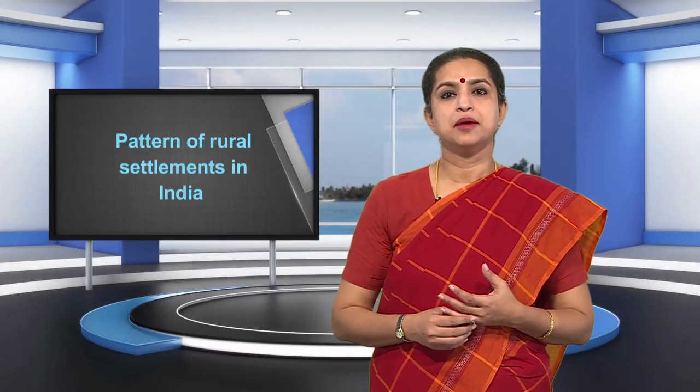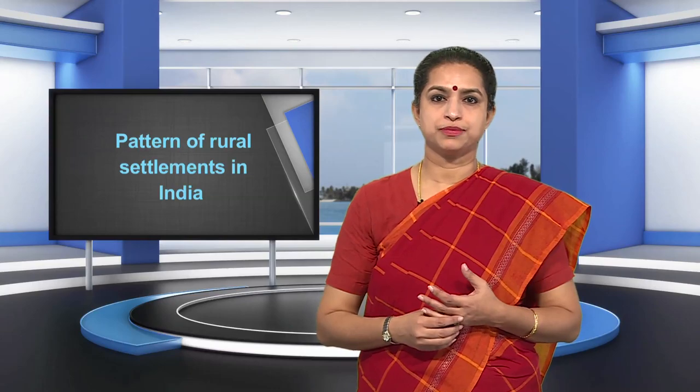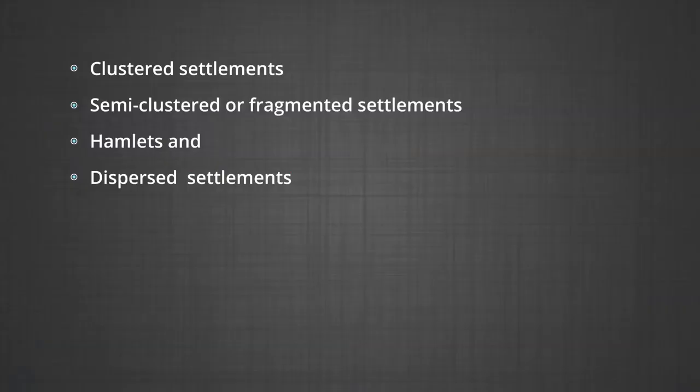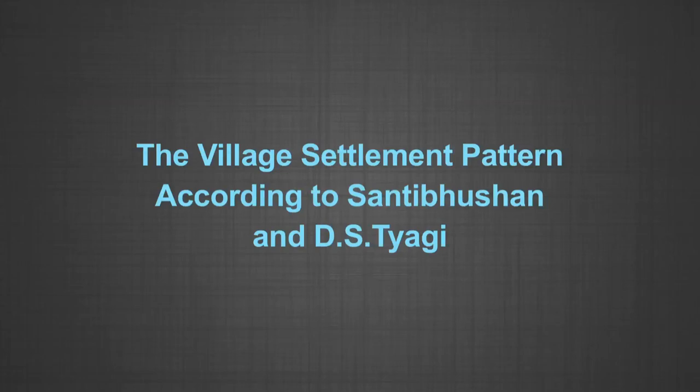Patterns of rural settlements in India may be classified into four types: clustered settlements, semi-clustered or fragmented settlements, hamlets, and dispersed settlements. Shanti Bhushan and D.S. Tyagi classified village settlement patterns in India into four categories.